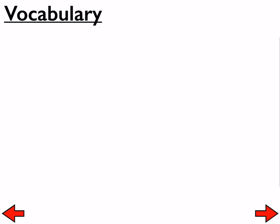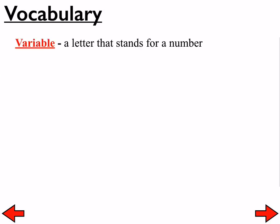Some vocabulary, so we can put names to all of these things we're talking about today. A variable is a letter that stands for a number — that's one typical definition. So here are some examples: h is a variable, w is a variable. We have lots of things we could use for variables.